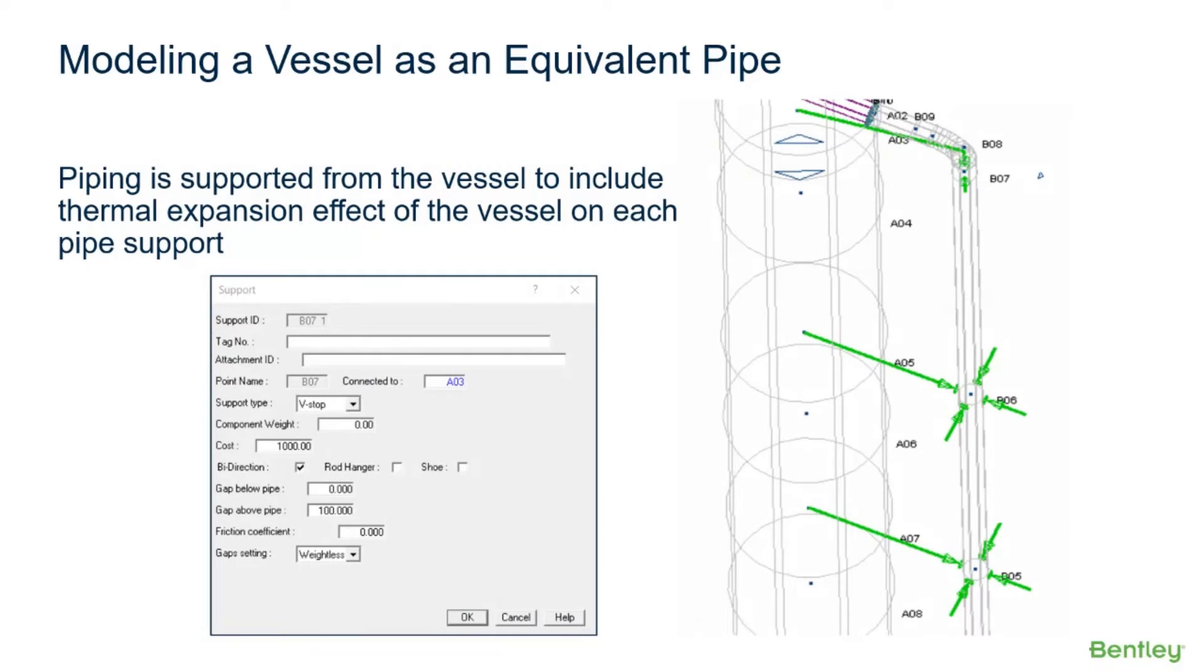Again, due to thermal expansion, thermal movements along the length of the vessel will be different, considering the distance of each point on the vessel with respect to the vessel anchor.